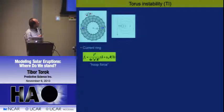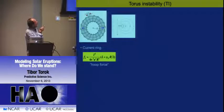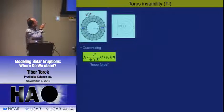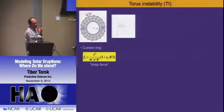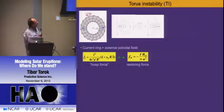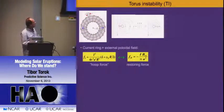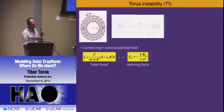One way to look at this: if you cut through the cross section and look from the side, here is your current and that's the magnetic field it produces. All the field produced outside has to also go inside the ring, so the field is much more packed there, giving a much stronger magnetic pressure inside than outside—this thing simply wants to expand. If you want to keep it stable, you can add an external field. If you choose the right field, you end up with an equilibrium situation because the additional field gives you a restoring force pointing inward.